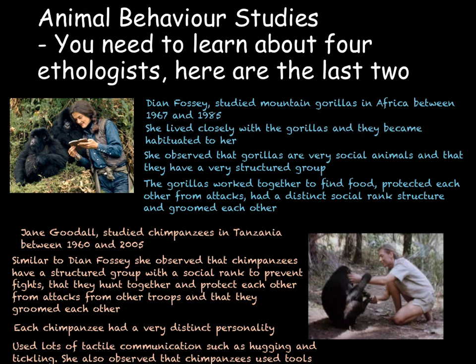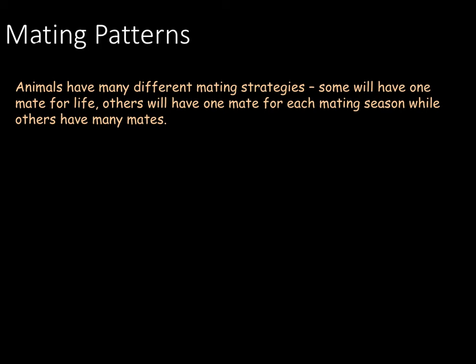We are now going to look at how animals use behaviour in order to find a mate, as well as the parenting behaviours that animals show. Within the animal kingdom there are lots of mating patterns. Some animals will have one mate for life, others will have one mate for each mating season, while others have many mates.